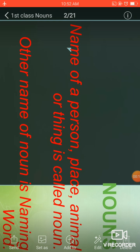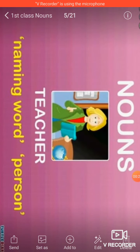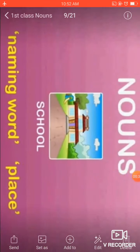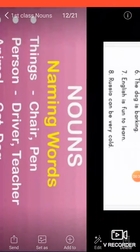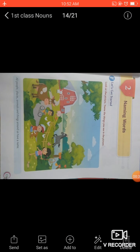Other name of noun is naming word. We had read about the examples of thing, person, place, and animals. In the book we had done four pages.